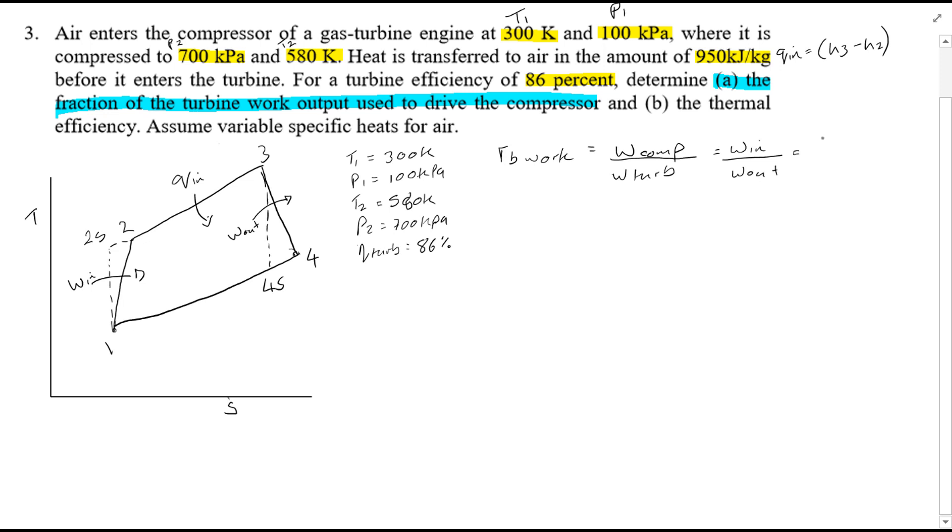Which is also the work in divided by the work out. And this is clearly since the compressor is acting between stages 1 and 2, and the turbine between stages 3 and 4, this is then equal to H2 minus H1 divided by H3 minus H4. Now of course these points here H4 and H2 are the actual points, not the isentropic points. So in order to work this out we're obviously interested in finding H1, H2, H3 and H4.